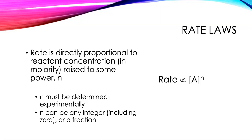I also want to talk about the exponent n before moving on. n can be any integer — it can even be zero — or it can be a fraction. n is a really important thing because it's really what determines the relationship between rate and concentration.